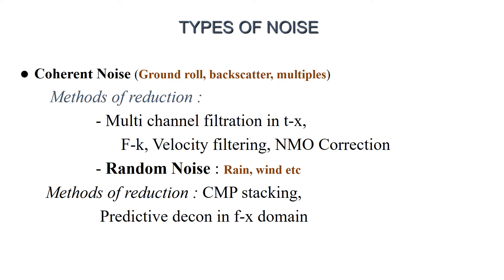Whenever we receive a raw signal it is contaminated by noise. There is coherent noise and random noise. The coherent noise terms include ground roll, backscatter, and multiples. Coherent noise can be reduced by velocity filtering, FK filtering, NMO correction, and multichannel filtration. For random noise, you can eliminate it by deconvolution and CMP stacking.